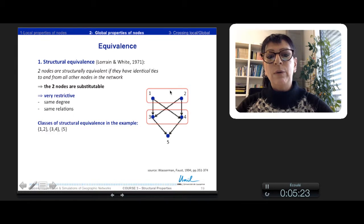So here we have a class between 1 and 2 because they have exactly the same relation with 3 and 4. We have another class with 3 and 4 which have exactly the same relation with 1 and 2 and with 5. And 5 represents a single class by itself.